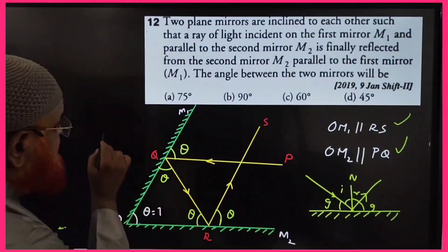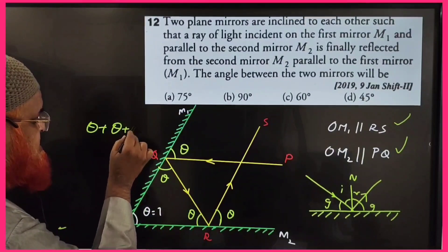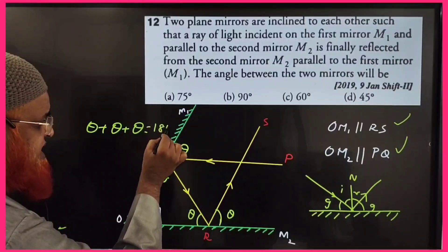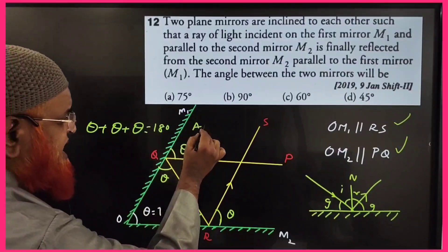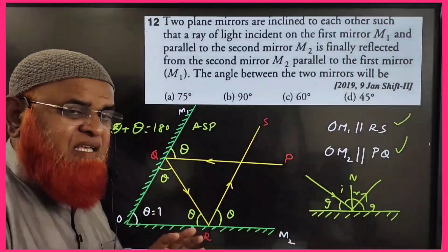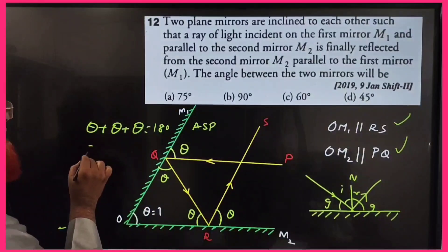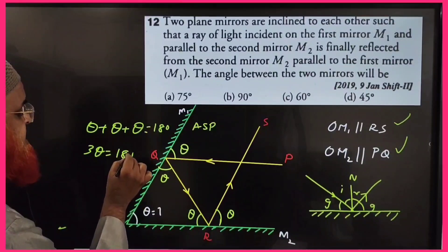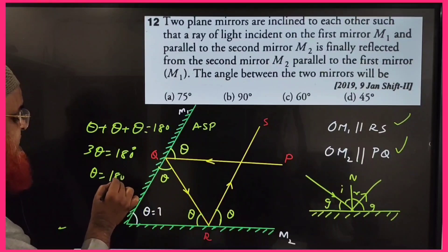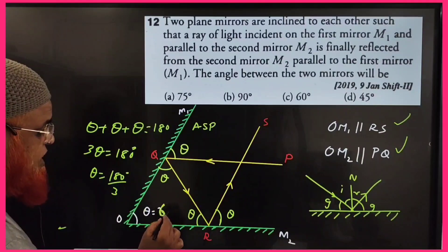Now, these three angles are theta plus theta plus theta. They are going to be 180 degrees — this is the angle sum property, meaning the sum of angles in a triangle is 180 degrees. Therefore, 3 theta equals 180 degrees, and theta equals 180 divided by 3, which is 60 degrees.